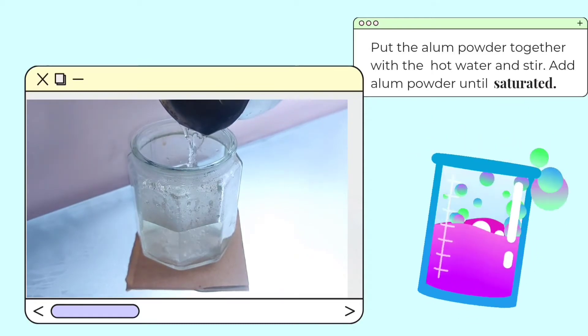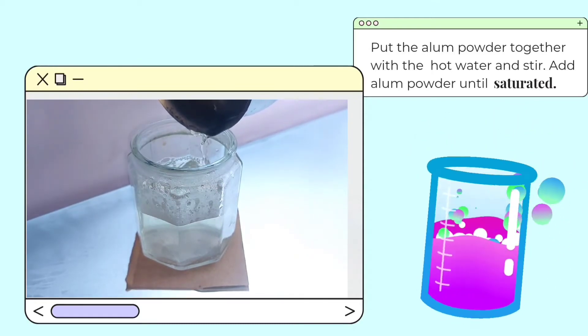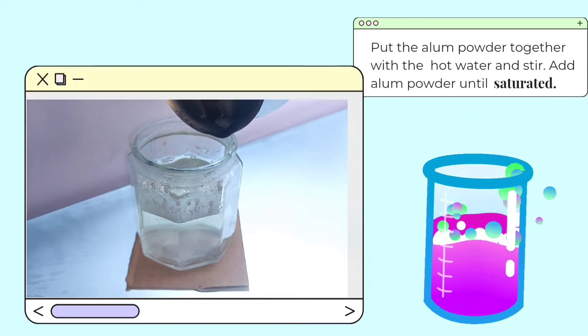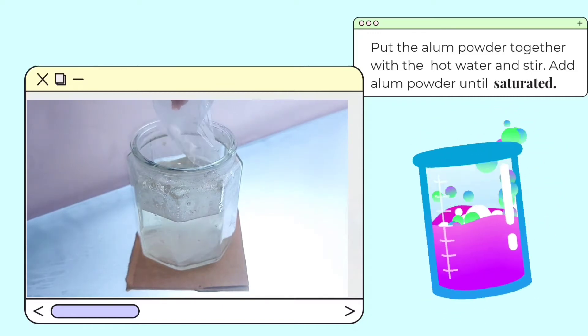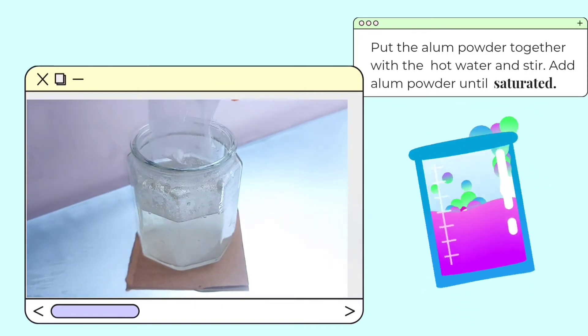You can also add more hot water until your desired amount is acquired. As you add more water, put more alum in the water to keep it saturated.